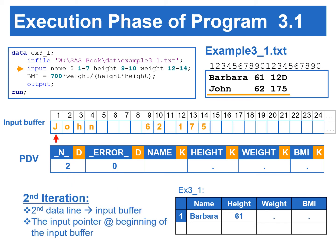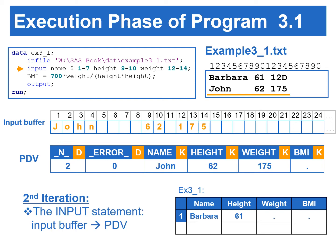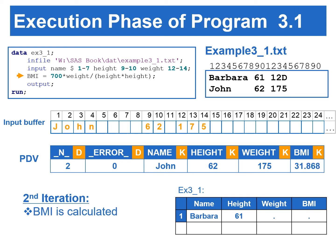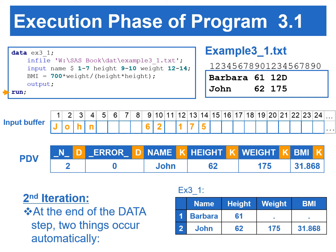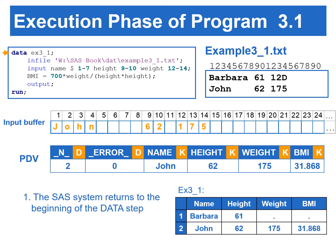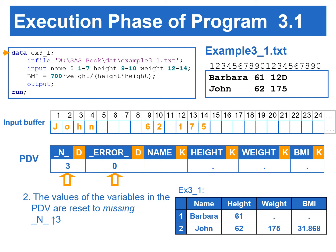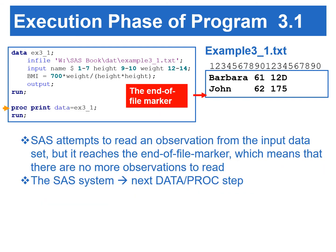During the second iteration of the data step execution, the second data line is read into the input buffer by the INPUT statement. The INPUT statement correctly copies the contents from the input buffer to the PDV. BMI is correctly calculated. The OUTPUT statement copies the contents from PDV to the output data set. When SAS reaches the end of the data step, the same two things happen again: SAS returns to the beginning of the data step, _N_ is incremented to 3, and the non-automatic variables are set to missing. SAS attempts to read an observation but reaches the end-of-file marker, meaning there are no more observations to read. SAS then goes to the next DATA or PROC step.